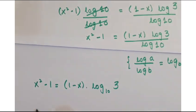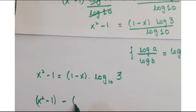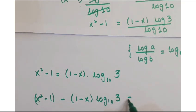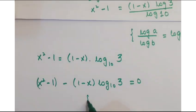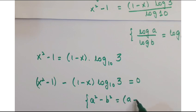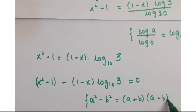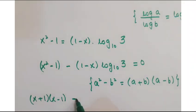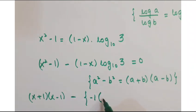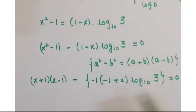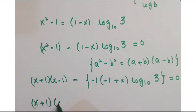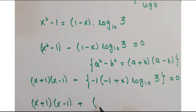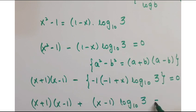Now, just move this value to the left hand side, equals to 0. You can expand x squared minus 1 by applying the algebraic identity a squared minus b squared is equals to a plus b into a minus b. So you can write it as x plus 1 into x minus 1, and here just take out minus 1 common, so you are left with minus 1 plus x into log of 3 to the base 10.